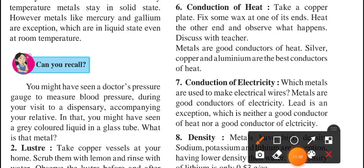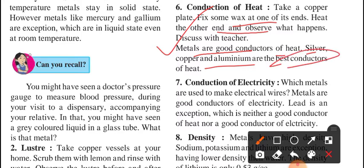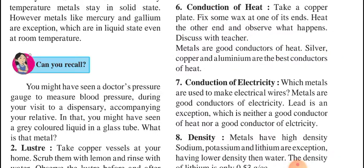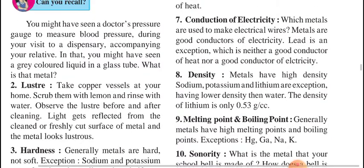The next property is conduction of heat. Take a copper plate, fix some wax at one end, heat the other end and observe what happens — obviously the wax will melt. So metals are good conductors of heat. Silver, copper, and aluminium are the best conductors of heat, which is why our utensils are made from aluminium and copper. Silver is also a good conductor but is very costly nowadays.